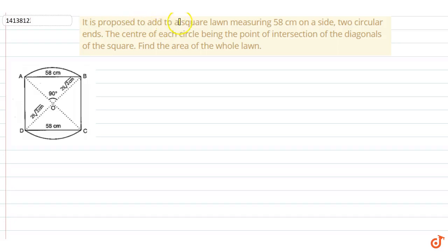It is proposed to add to a square lawn measuring 58 cm on a side, two circular ends. The center of each circle being the point of intersection of the diagonals of the square. We find area of the whole lawn.